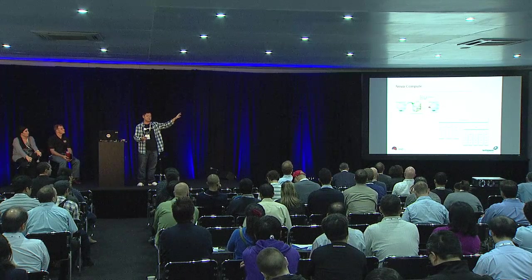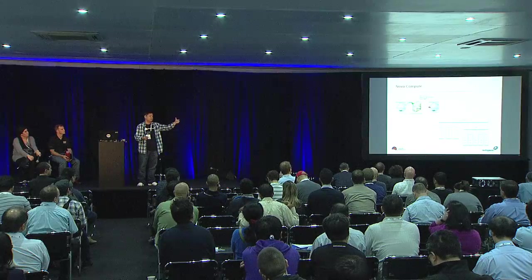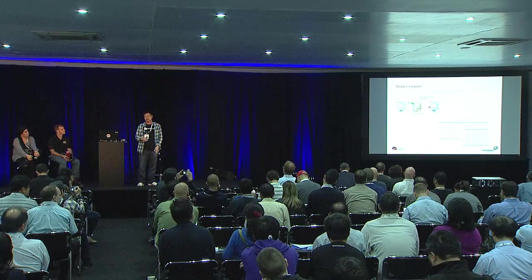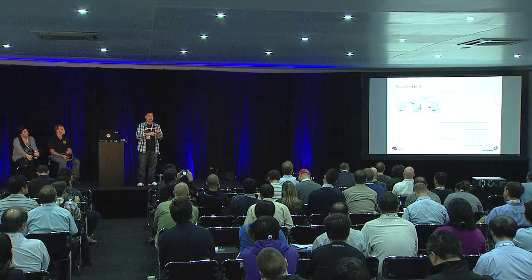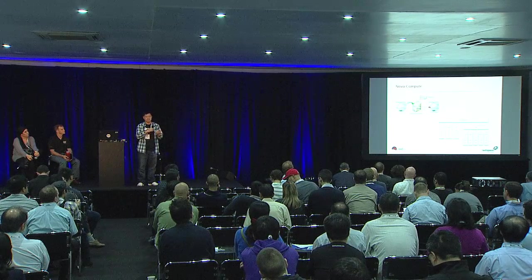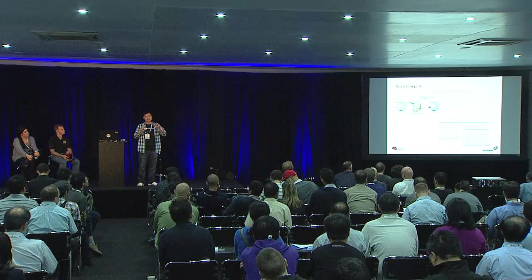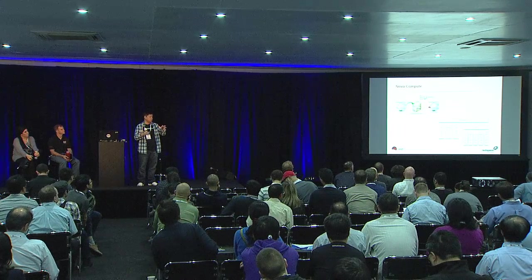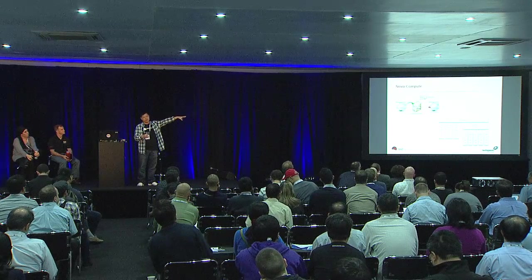One of the first projects that came with OpenStack is the Nova Compute project — the project that essentially manages compute resources, typically hypervisors. If you think about the number of hypervisors on the market today, including Hyper-V, VMware, KVM, Xen, and lately LXC and Docker — all these different hypervisor-type resources that can spin up compute — all of that can be managed via Nova Compute.